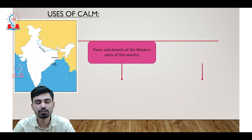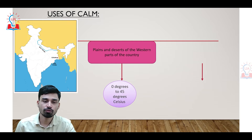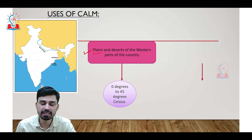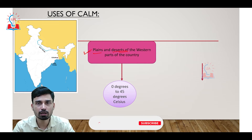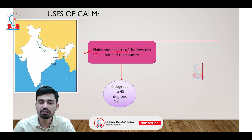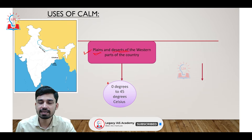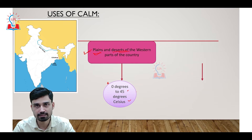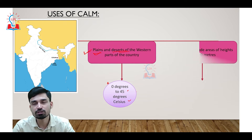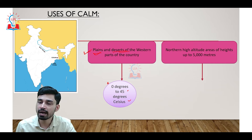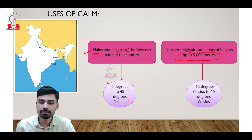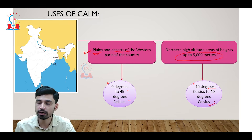Now, what are the main uses of CAM? The Indian military intends to use the CAM system in both the plains and desert areas in the western part of the country, where it is expected to function in a wide temperature range between 0 degrees to 45 degrees Celsius. The same system will also be used in the northern high-altitude regions of the Himalayas up to almost 5,000 meters, where it must operate in temperatures ranging from minus 15 degrees Celsius to 40 degrees Celsius.